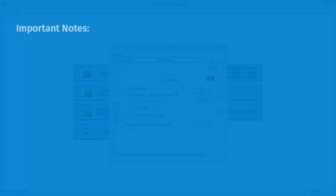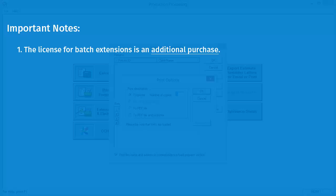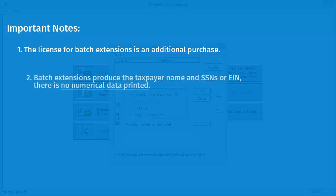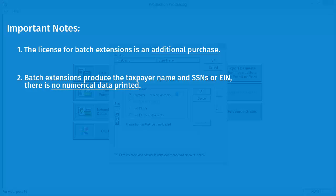Some quick notes: the license for batch extensions is an additional purchase. If the option is not available for the current year and it has been purchased, then it has not been installed. Also, batch extensions produce the taxpayer name and SSNs or EIN — there is no numerical data printed.